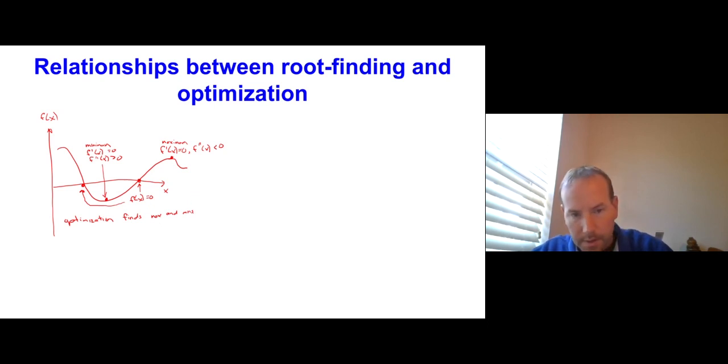It turns out these max and mins are roots of f prime of our function. Because the maximum and minimum are roots of f prime, there's going to be a relationship between the methods that we use for root finding and optimization.